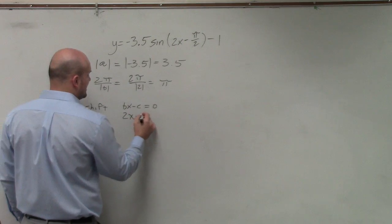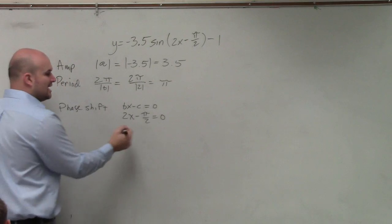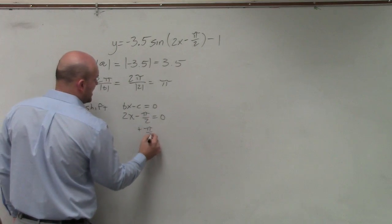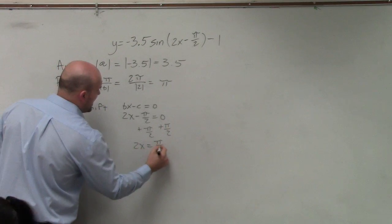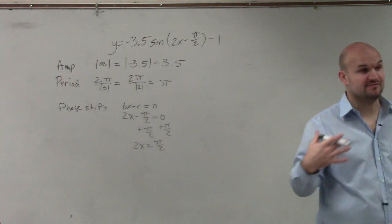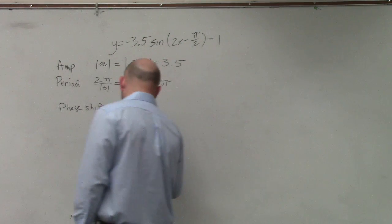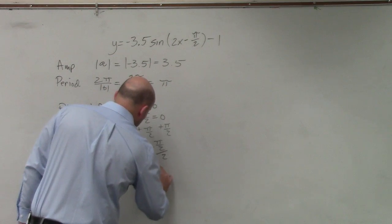to both sides and get 2x = π/2. To solve for x, I divide by 2 on both sides, and x equals π/4. Therefore, I'm shifting π/4 to the right, not π/2.